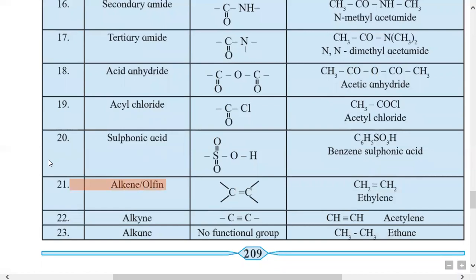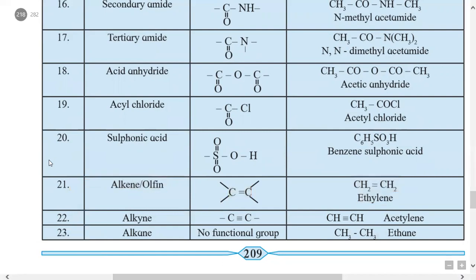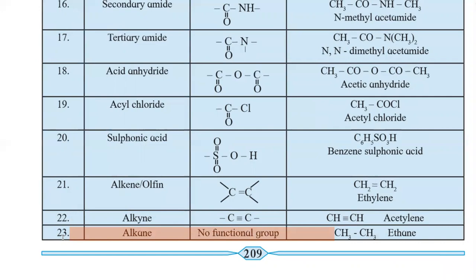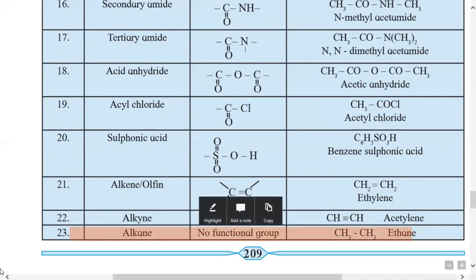The twenty-first type is alkene, also called olefin, containing a carbon-carbon double bond. Example: CH2=CH2 is ethene or ethylene. The twenty-second type is alkyne, containing a carbon-carbon triple bond; example is acetylene (ethyne). The last type, alkane, has no particular functional group — only carbon and hydrogen atoms. Example: CH3-CH3 is ethane.